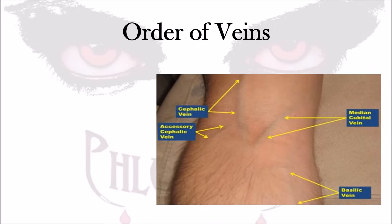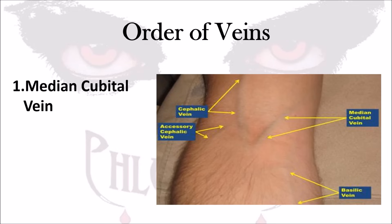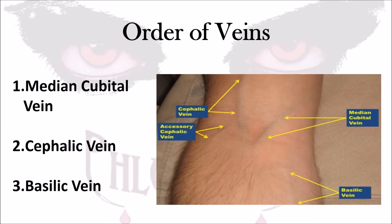We have three major veins to look at. The first is the median cubital vein — this is the primary vein we should be looking for when inspecting an arm. Second, if the median cubital vein is not accessible, then we should look to the cephalic vein. If the cephalic vein is not accessible as well, then last we should consider the basilic vein. The basilic vein should always be considered last when inspecting an arm.